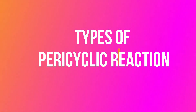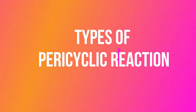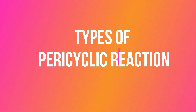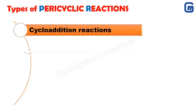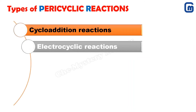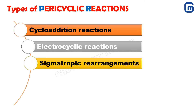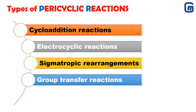Pericyclic reactions are of different types: cycloaddition reactions, electrocyclic reactions, sigmatropic reactions, and group transfer reactions. These will be discussed one by one in detail in our coming lectures.